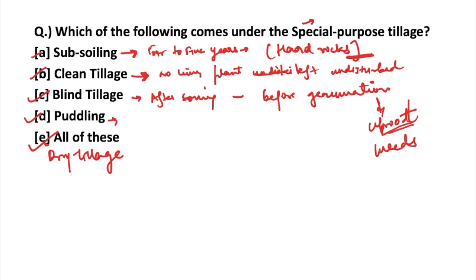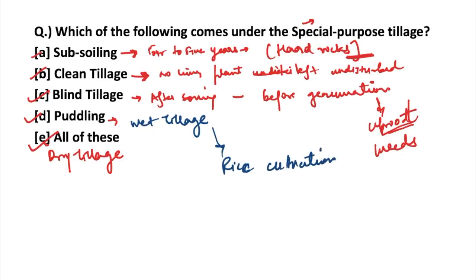Another method is wet puddling, also known as wet tillage. The tillage operation done on land with standing water is known as wet tillage or puddling — its primary purpose is for rice cultivation, as rice requires more water. Dry tillage is not the opposite of wet tillage but is quite similar — it is done so that the soil becomes more porous, and is used in areas with just sufficient moisture for growing crops. These are the different methods under special purpose tillage.